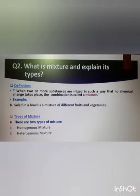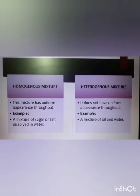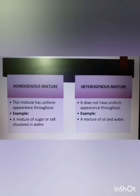Types of mixtures: there are two types — number one, homogeneous mixture; number two, heterogeneous mixture. Now we will see the difference between them. Draw two columns: homogeneous mixture has uniform appearance throughout, for example a mixture of sugar or salt dissolved in water. Heterogeneous mixture does not have uniform appearance throughout, for example a mixture of oil and water.